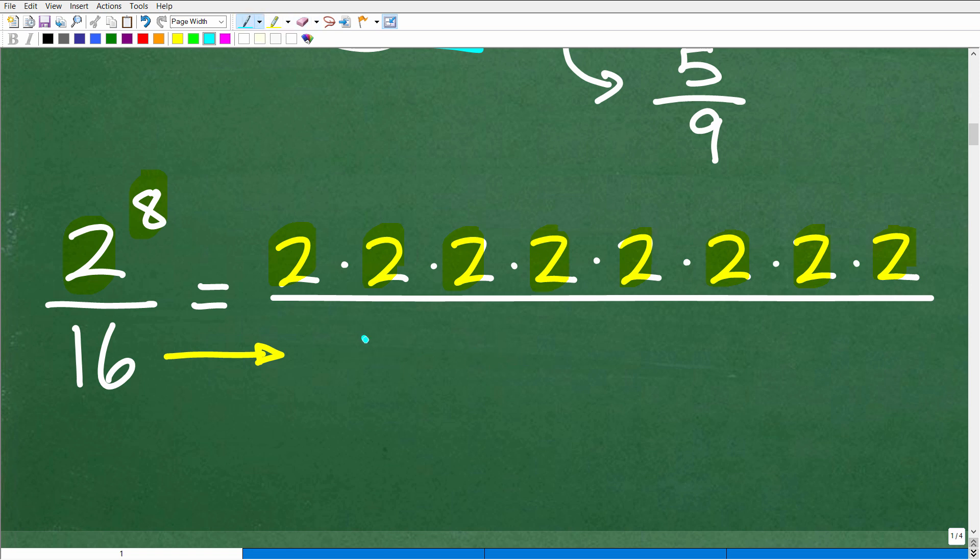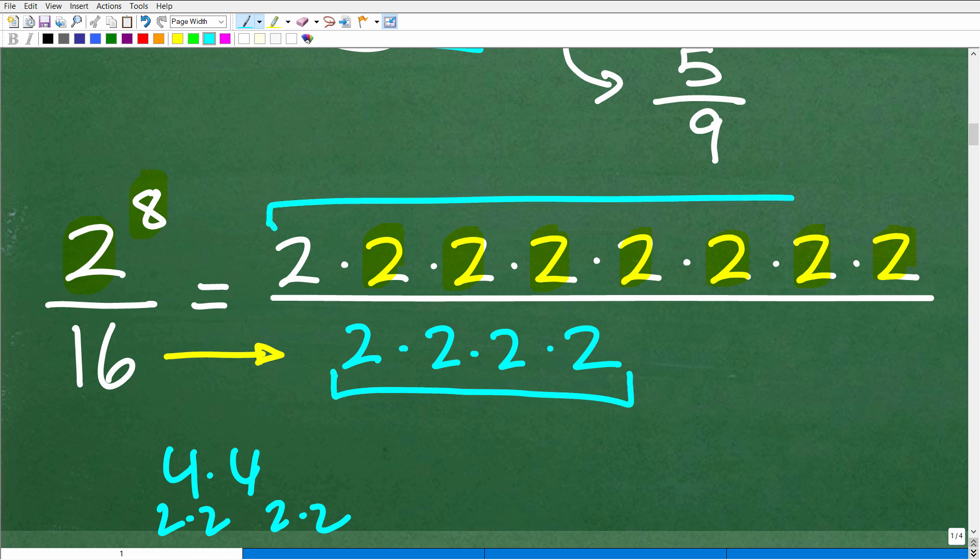But what I want to show you here is how this problem is connected to algebra. But you could also go 2 times 8, right? You're like, well, 2 times 8, that's 16. So I've got a 2 here. I've got a 2 here. I could cross-cancel. But I've still got to deal with this 8. But what you could do is recognize that, you know what, 16, if you said, oh, that's 4 times 4. And then 4 is 2 times 2. And 4 over here is 2 times 2. Well, 16 really is 2 times 2 times 2 times 2.